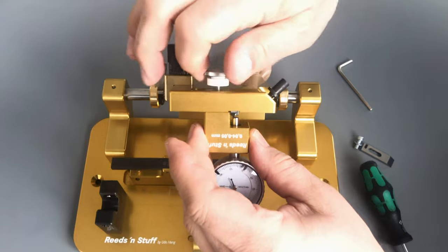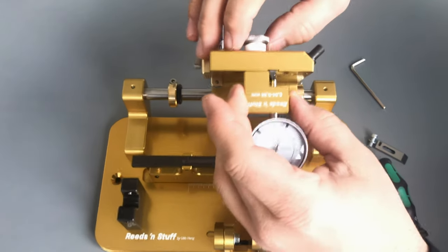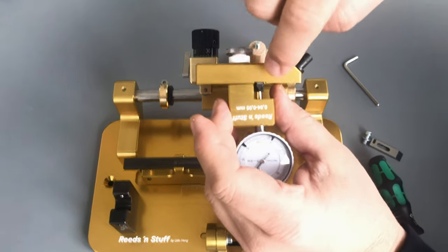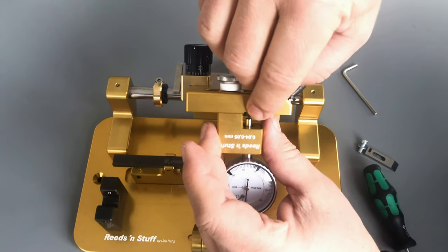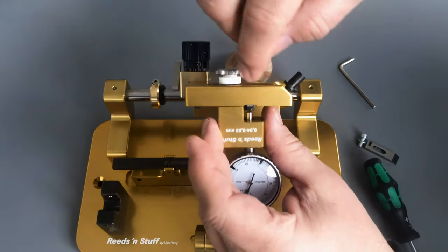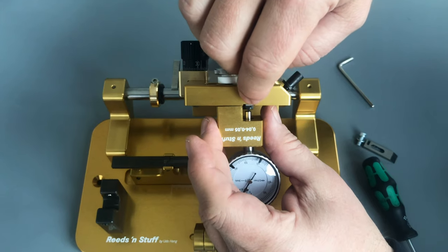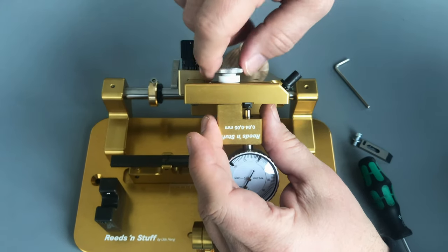There is one thing I would like to point your attention at. The tip of the dial indicator, the round one, should sit so that the black holder sits in the middle of that tip.